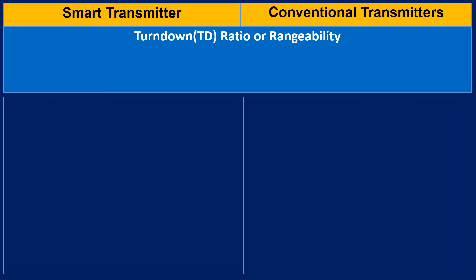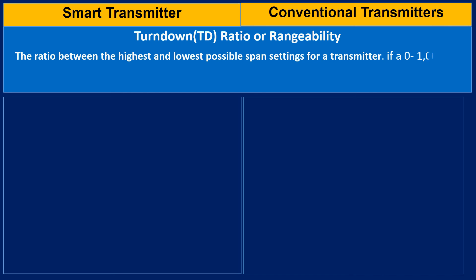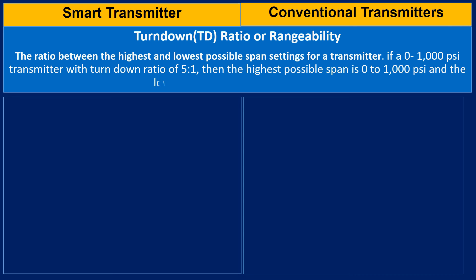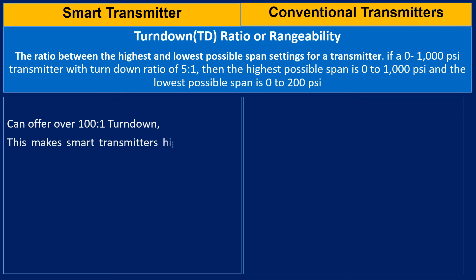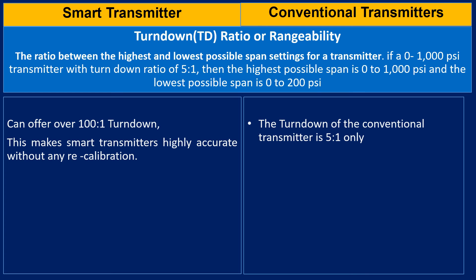Comparing both transmitters in terms of turndown ratio: the turndown ratio is the ratio between the highest and lowest possible span setting for a transmitter. For example, if you have a 0 to 1000 PSI pressure transmitter with a turndown ratio of 5:1, then the highest possible span will be 0 to 1000 PSI and the lowest possible span can be 0 to 200 PSI. Smart transmitters can offer over 100:1 turndown ratio, making the pressure transmitter highly accurate without any recalibration. The turndown ratio of a conventional transmitter is 5:1 only.